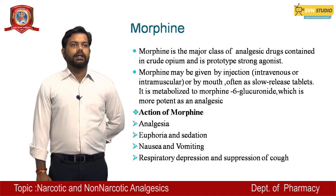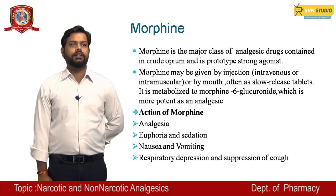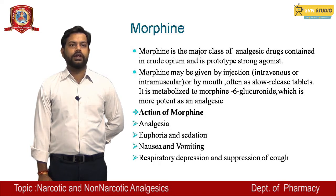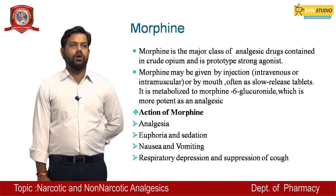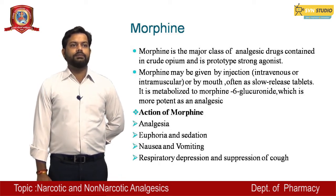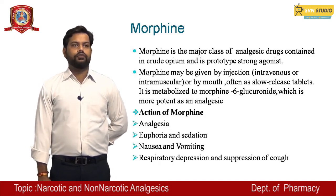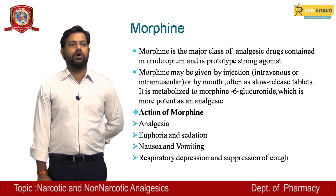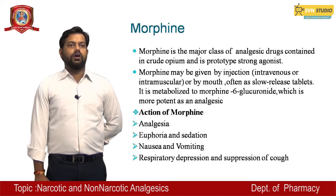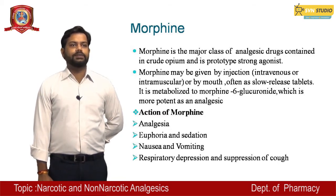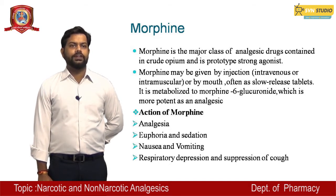Morphine is the major analgesic drug contained in crude opium and it is a prototype strong agonist. Morphine is extracted from the crude drug called opium, from the opium poppy plant. Morphine may be given by injection through intravenous or intramuscular routes, or by mouth often as slow-release tablets. It is metabolized to 6-glucuronyl morphine, which is more potent as an analgesic.